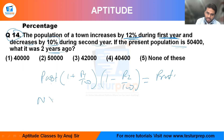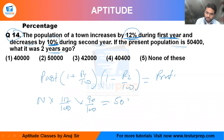Let N be the past population. N is first increased by 12 percent, so it becomes multiplied by 112/100. After that it is decreased by 10 percent, multiplied by 90/100. The final present value is 50400. So N = 50400 × 100 × 100 divided by 112 × 90.